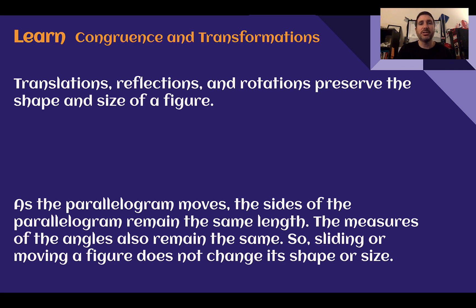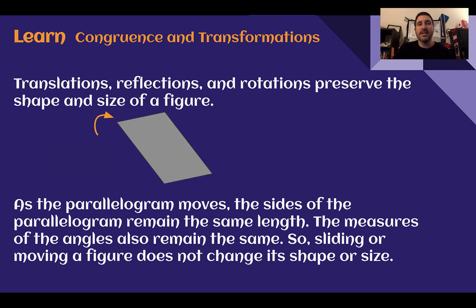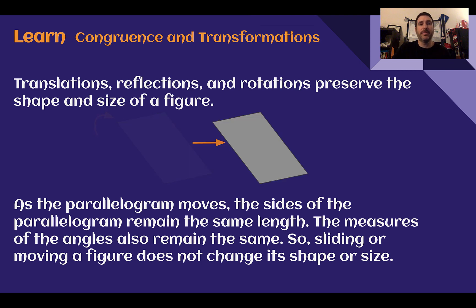Congruence and transformations. Translations, reflections, and rotations preserve the shape and size of a figure. Consider the following sequence of transformations. We start with a parallelogram. If we rotate the parallelogram, the size and the shape are still the same. If we translate the parallelogram, the size and the shape remain the same. The side lengths remain the same, the angles remain the same. So translating, rotating, or even reflecting will not change the size or the shape. This is what we call congruent — the size and the shape do not change.